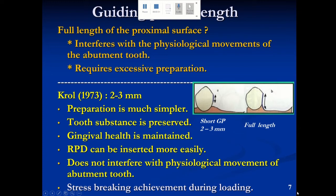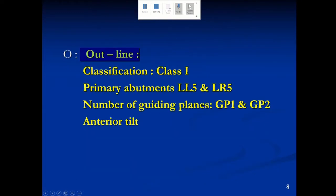The length of the guiding plane is important. We have to avoid full-length proximal plate and guiding plane preparation because this will interfere with the physiological movement of the abutment tooth and will require excessive preparation. Call (1973) advised the use of short guiding planes — two to three millimeters — on the distal surface of the primary abutment teeth. This has the advantages of conservative preparation, maintenance of gingival health, and an important stress-breaking effect of short guiding planes, which will be discussed later when talking about direct abutment selection.